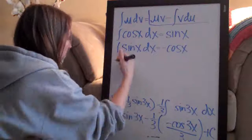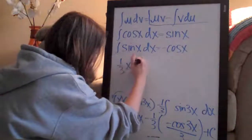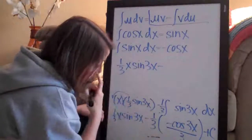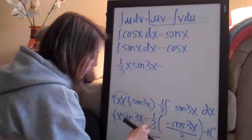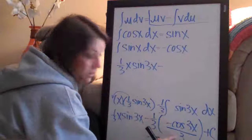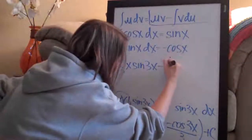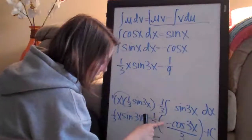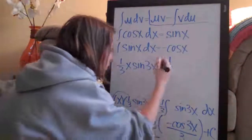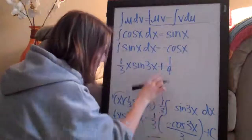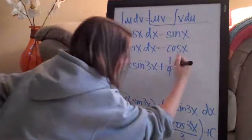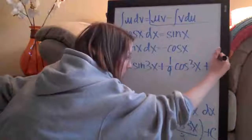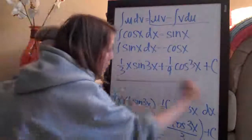Now let's write our final answer nice and clear. We bring this up: it's (1/3)x sin(3x) minus, and then we've got 1/3 out front and a 3 in the denominator from the chain rule, so the coefficient becomes 1/9. We also have minus a negative, so that becomes a positive. Our final answer is (1/3)x sin(3x) + (1/9)cos(3x) + C.